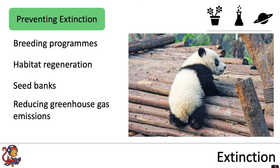Releasing greenhouse gas emissions causes global warming, and global warming is linked to climate change and habitat loss, which both cause extinctions. So if we can reduce our greenhouse gas emissions, we are going to be able to prevent some of these species going extinct.